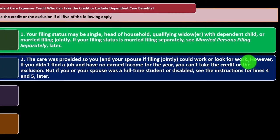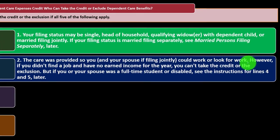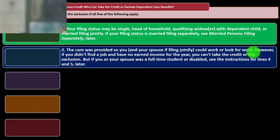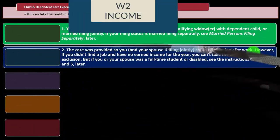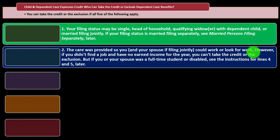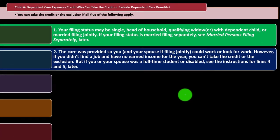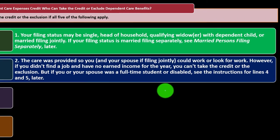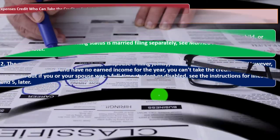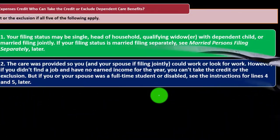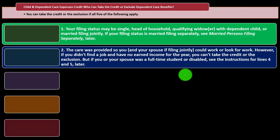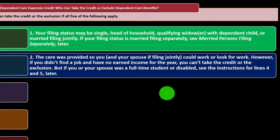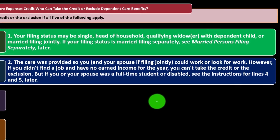To show you worked or looked for work — especially for married couples — you would demonstrate that both spouses were working, typically through W-2 income or self-employment income like a Schedule C. However, if you didn't find a job and had no earned income for the year, you generally need to show you were at least looking for work to qualify. The IRS looks for earned income as evidence of employment status. If you or your spouse was a full-time student or disabled, see the instructions for lines four and five — there are exceptions.